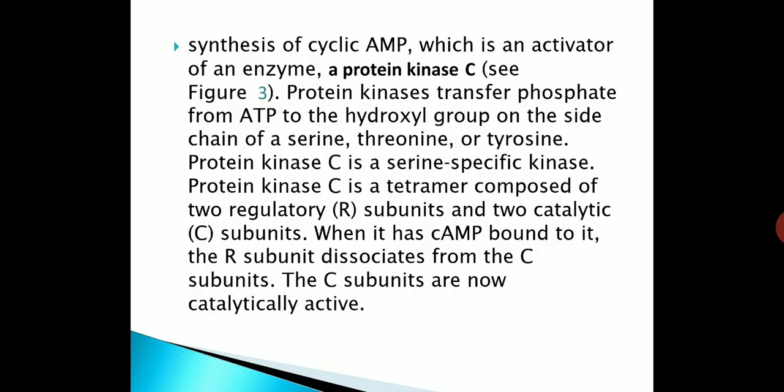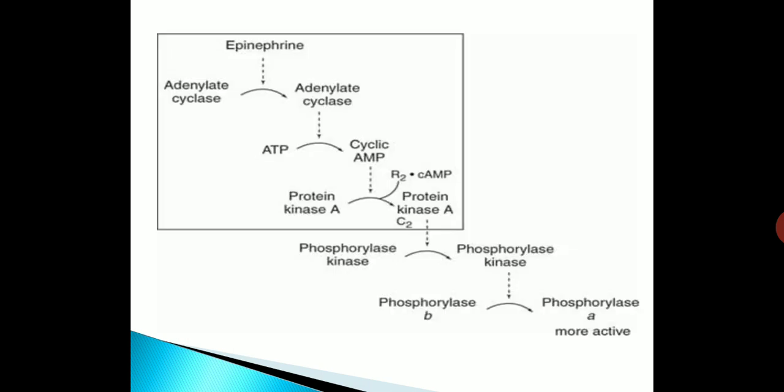Epinephrine stimulates the synthesis of cyclic AMP, which activates protein kinase A. Protein kinase transfers phosphate from ATP to the hydroxyl group on the side chain of serine, threonine, or tyrosine. Protein kinase A is a tetramer composed of two regulatory (R) subunits and two catalytic (C) subunits. When cAMP binds to it, the R subunits dissociate from the C subunits, making the C subunits catalytically active.